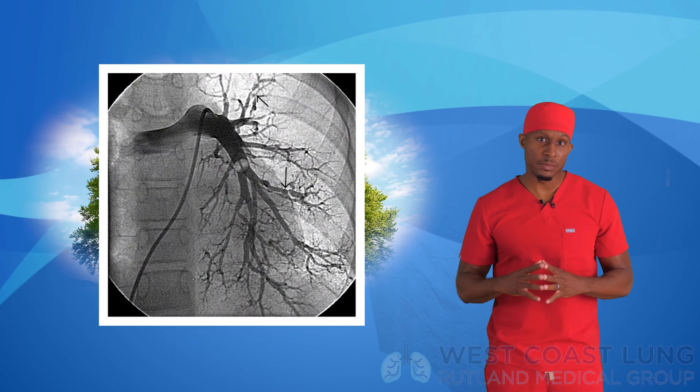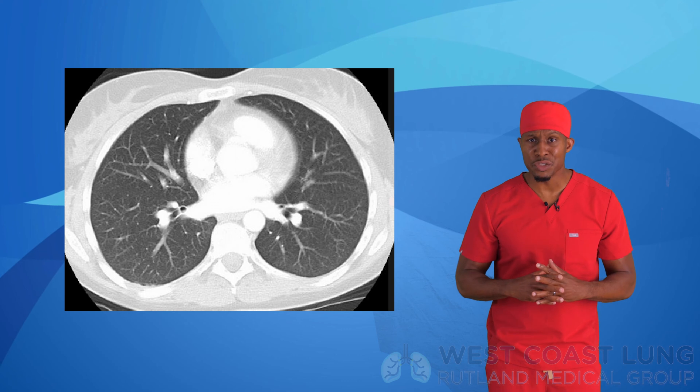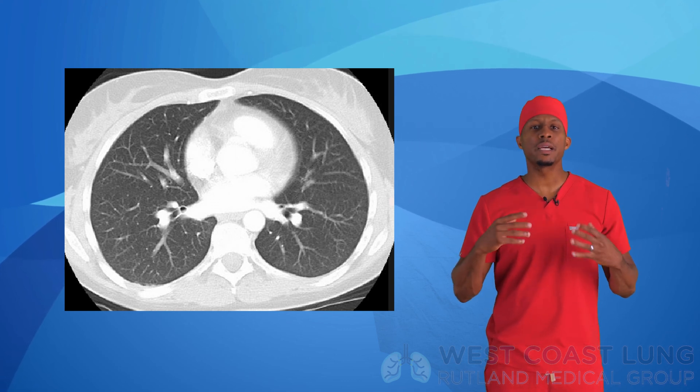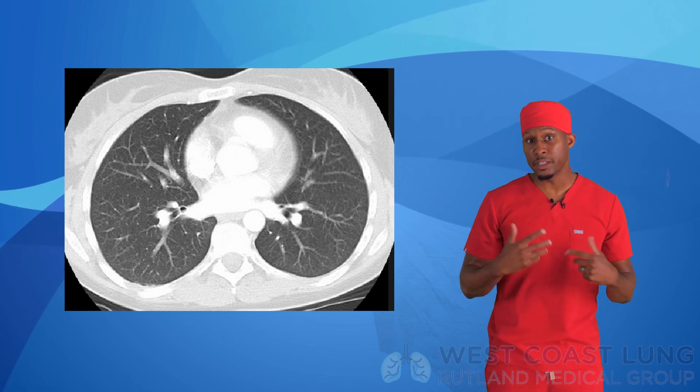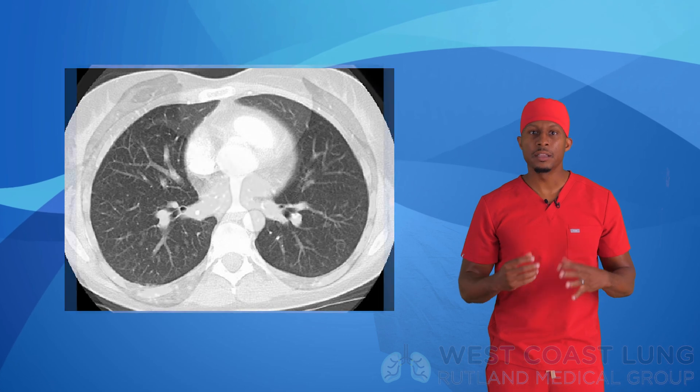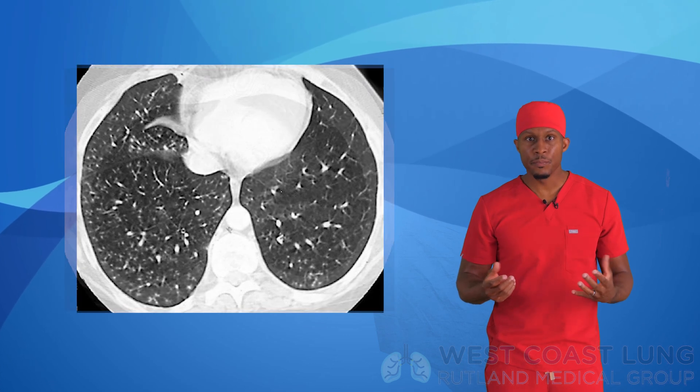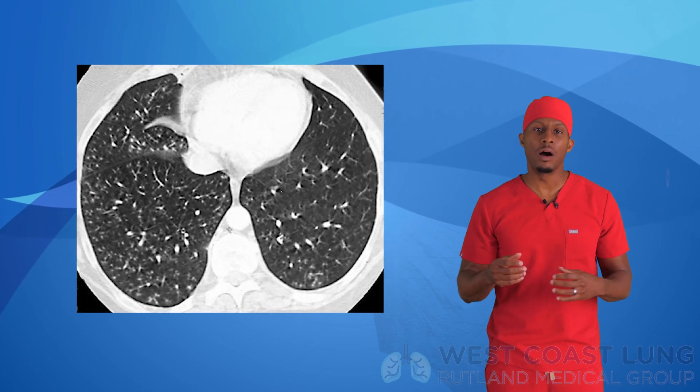Under normal circumstances, the lung is only full of air, so you won't see the branches very well. But when the branches become soft tissue — which in most cases for a tree and bud appearance is mucus — the branches are accentuated and you can see them well. Imaging is pretty easy to describe once you see it. The trick in medicine is understanding the differential diagnosis: what can it possibly represent?